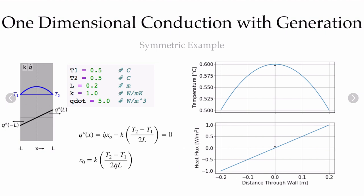We can calculate the location x₀ where the heat flux equals zero by taking the heat flux expression and setting it equal to zero. In the symmetric case where T1 equals T2, the term T2 minus T1 is zero, so x₀ equals zero. We'll revisit this formula as we move to different boundary conditions.